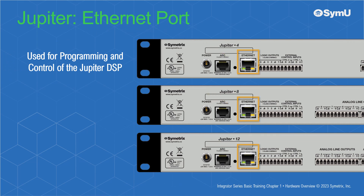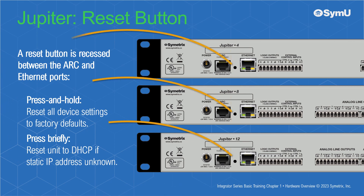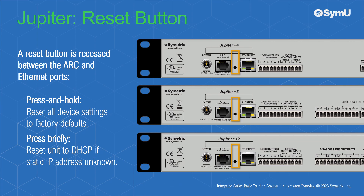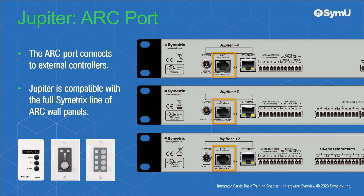The Ethernet port is used for initial programming and control of the Jupyter DSP. It can be connected directly to a Windows PC or accessed through a switch. A small hole houses a button that will either return the unit to factory settings if held, or if the DSP has been assigned a static IP and the address is unknown, press the reset button briefly to return to DHCP. The ARC port can connect to any of the Symmetrix line of ARC wall panels; only 24 volt DC ARC devices should be connected via the ARC port, as connecting non-compliant devices can damage the Jupyter DSP.